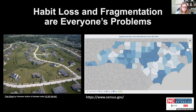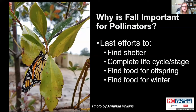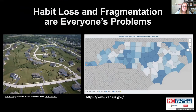Why is fall important for pollinators? It's kind of pollinators' last chance to get everything done. Unlike us, insects and other animals can't put on coats or turn on a heater — their bodies are attuned to temperatures. They will go into dormancy, so they're trying to find shelter, get to the next life stage that will help them get through winter, find food for their offspring, and build up stores. Fall is a very critical time — kind of the beginning of the end for them.